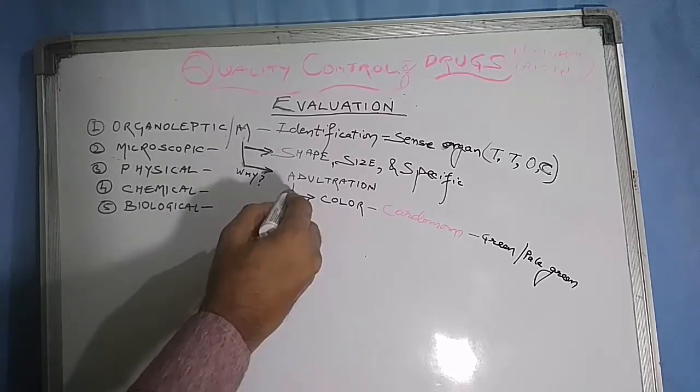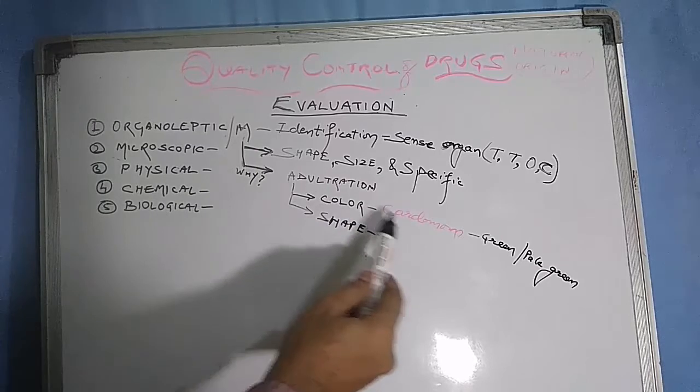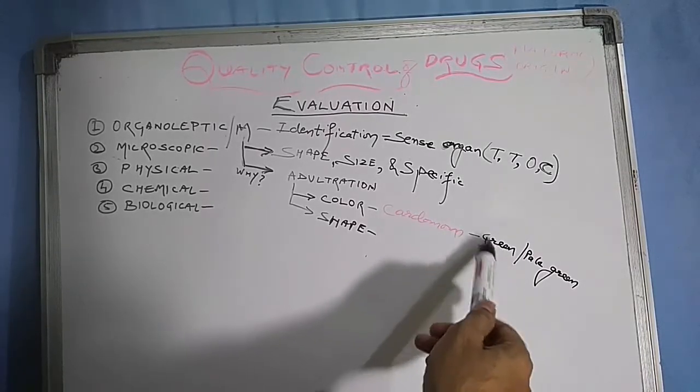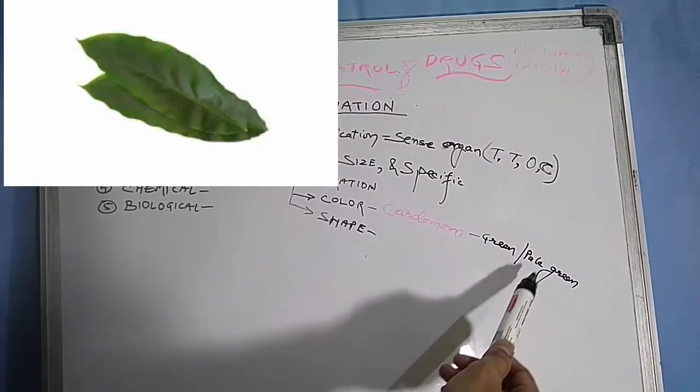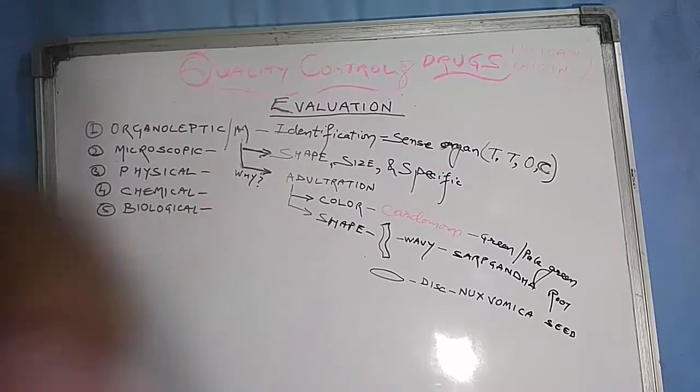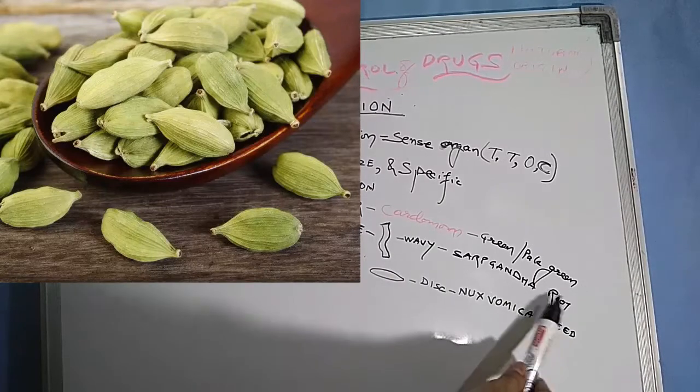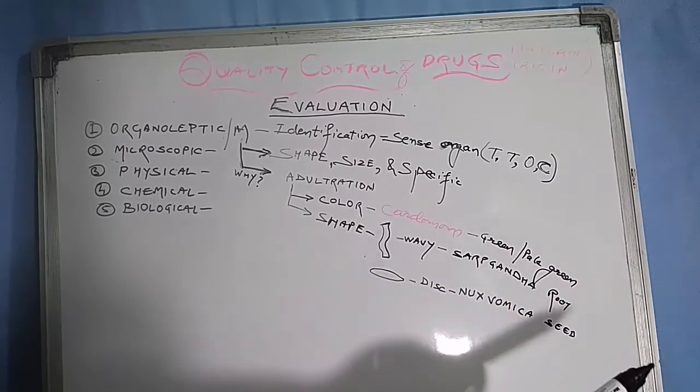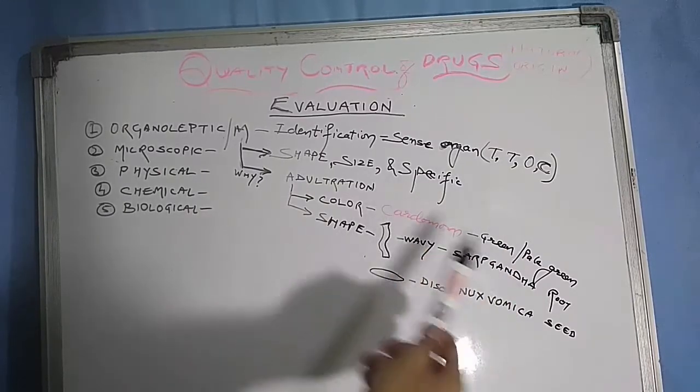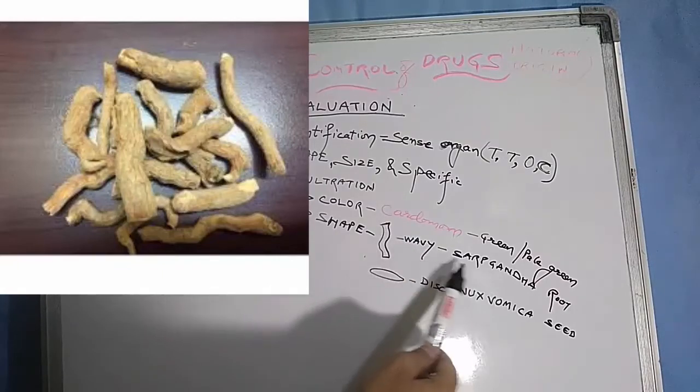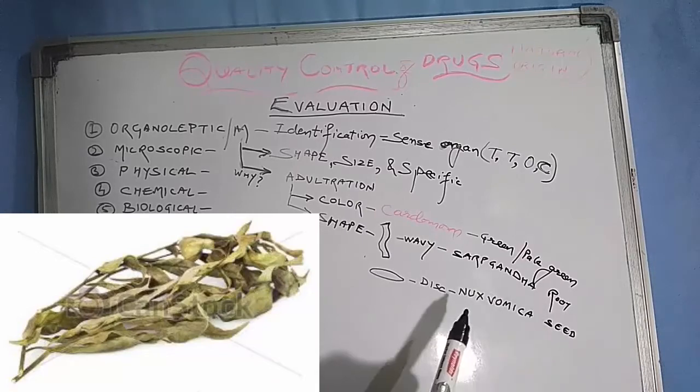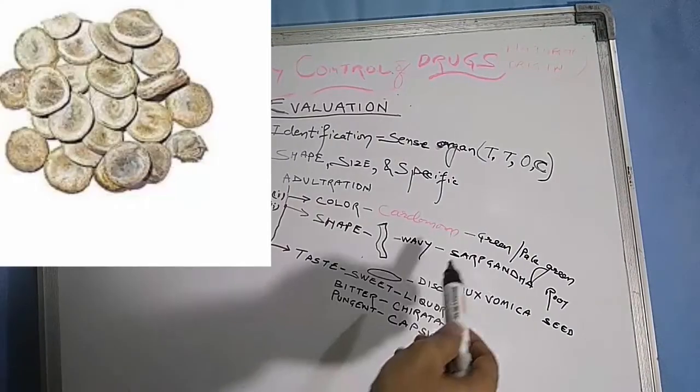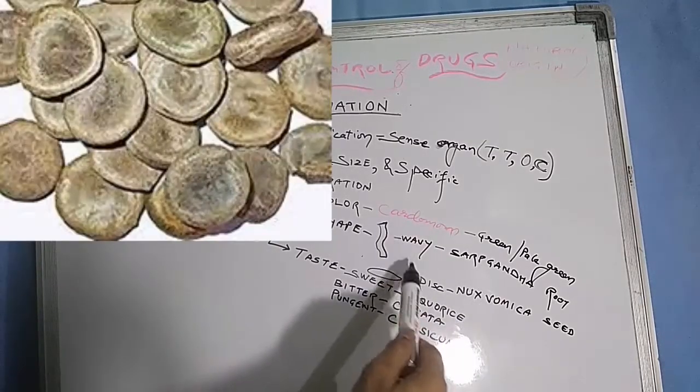Organoleptic evaluation is for unorganized drugs derived from plant parts using sensory organs like taste, touch, odor, or color. Organized drugs like leaves, flowers, and fruits are checked using morphological evaluation. Examples: cardamom color is green, when dried becomes pale yellow. Nux vomica seeds are disc-shaped. We can check adulteration with the help of shape.